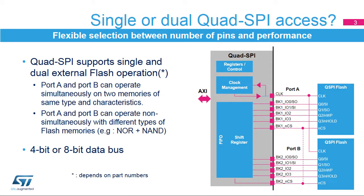The Quad SPI Memory Interface, integrated inside STM32F7 microcontrollers, provides a communication interface allowing the microcontroller to communicate with external SPI and Quad SPI memories. The Quad SPI Memory Interface supports the connection of one or two external memories, meaning data can be transferred over a 4- or 8-bit data bus between the memory and the microcontroller.